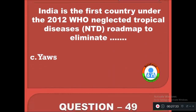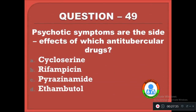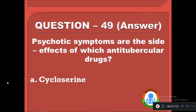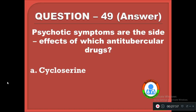Question 49: Psychotic symptoms are the side effect of which anti-tubercular drug? Option A: cycloserine, B: rifampicin, C: pyrazinamide, D: ethambutol. The correct answer is A, cycloserine induces psychotic symptoms in patients taking anti-tubercular drugs.